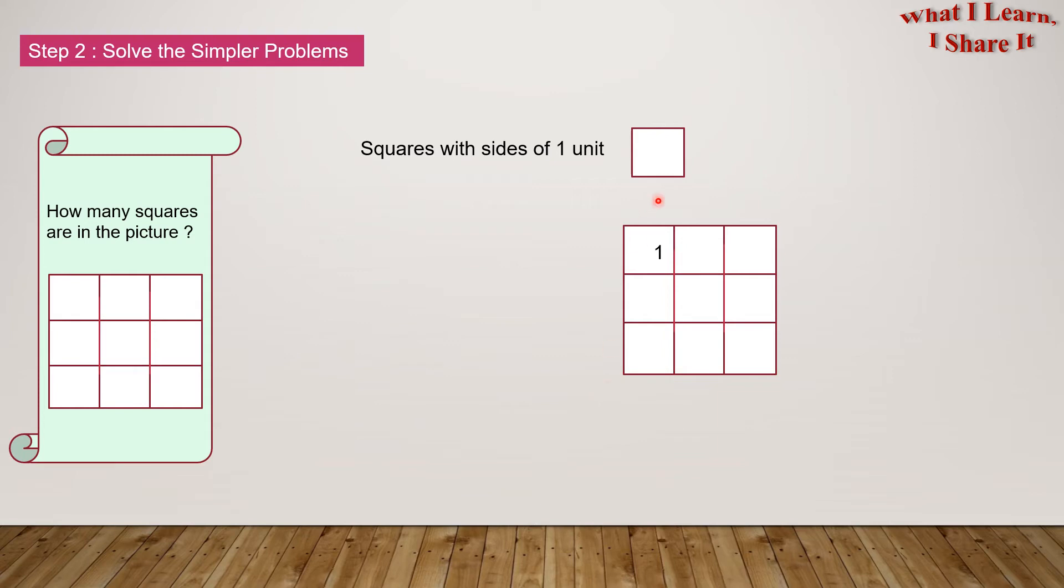1, 2, 3, 4, 5, 6, 7, 8, and 9. Number of 1 unit squares equals 9.